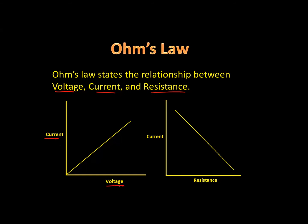As the voltage in a circuit is increased, the current also increases — that is a direct proportion. The second graph shows the relationship between current and resistance, and you'll notice that as the resistance is increased, the current actually decreases. That downward-sloping line represents an inverse relationship, an inverse proportion.